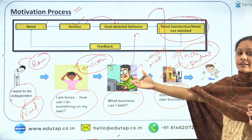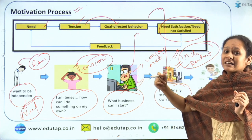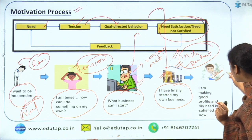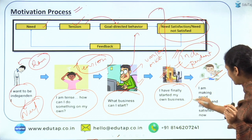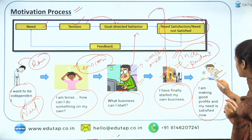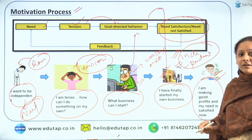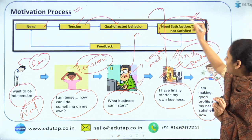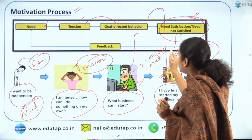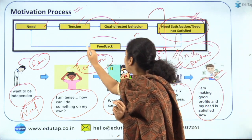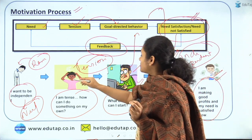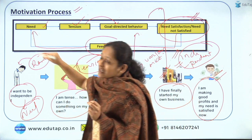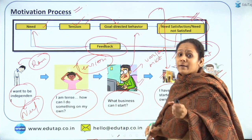What was his ultimate aim of starting the business? He wanted to become independent and earn money. If he is earning good money, it shows that his needs are satisfied. Then finally there is a feedback process, which means a sense of satisfaction is sent back.